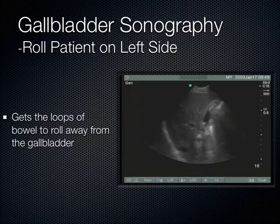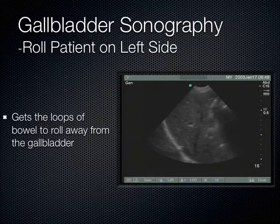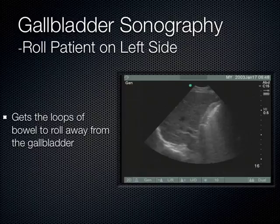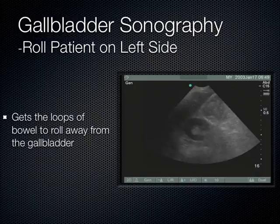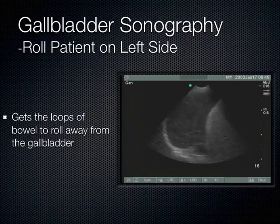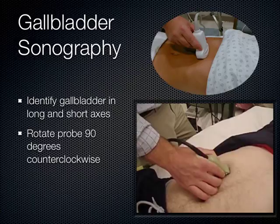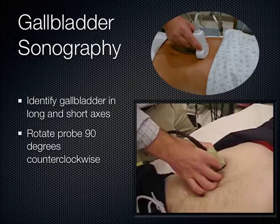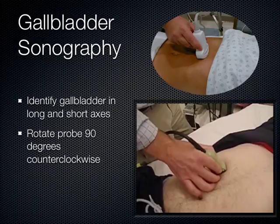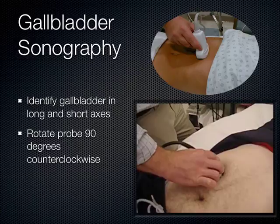This is a prior ultrasound fellow, Will Scruggs, showing the technique to scan the gallbladder. Once you identify the gallbladder in the long axis, you also need to view it in the short axis. Fan through the entire gallbladder in long axis looking for pathology. After you're done with the long axis, rotate the probe 90 degrees and view in the short axis, again fanning through the entirety of the gallbladder looking for any possible pathology.